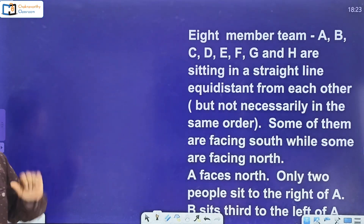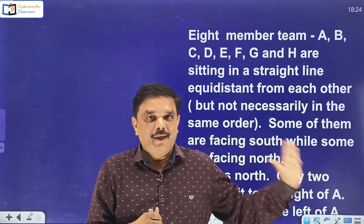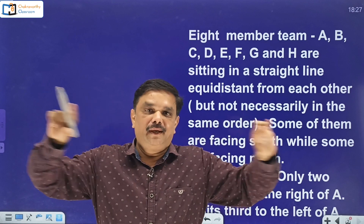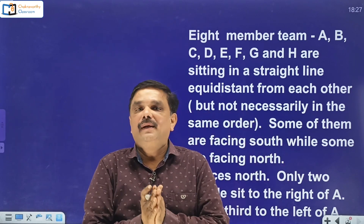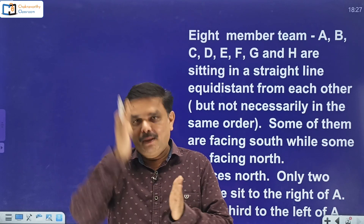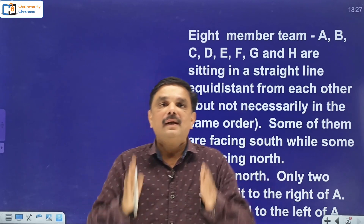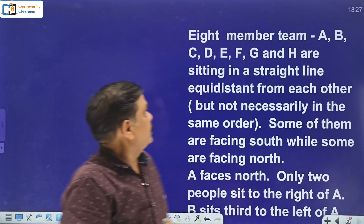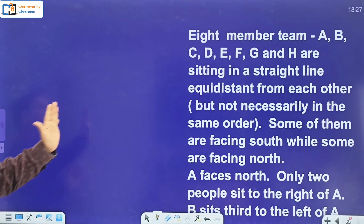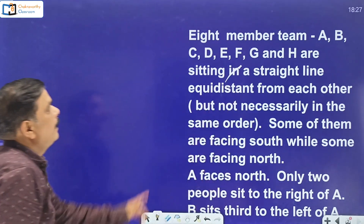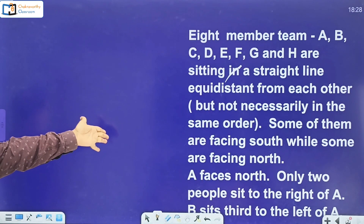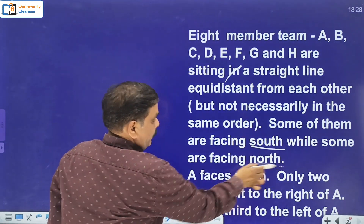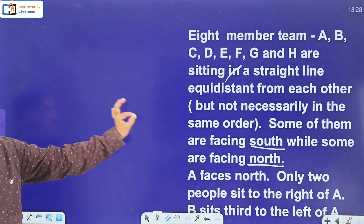The difficulty level of this question is moderate, but the question type and pattern are good. This question is from linear seating arrangement. Generally they give 8, 10, or 12 persons seated on a straight line, all facing one side — maybe north, south, east, or west. But in this type of question, some of them are facing one direction and some are facing the other direction. That is where you need to apply your logic. Here they have given an eight-member team: A, B, C, D, E, F, G, and H, sitting on a straight line equidistant from each other, not necessarily in the same order. Some of them are facing south while some are facing north.